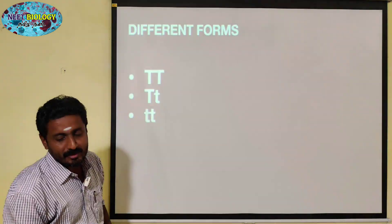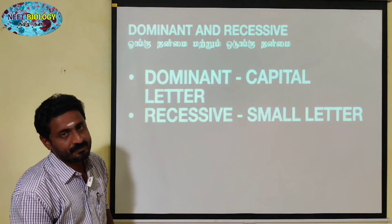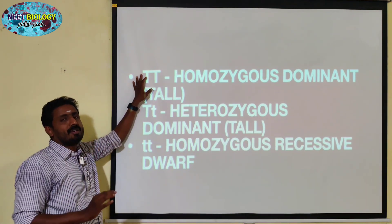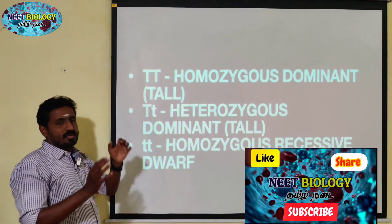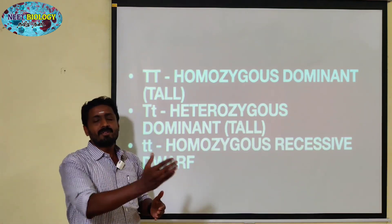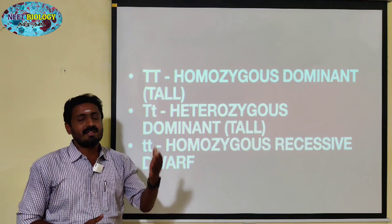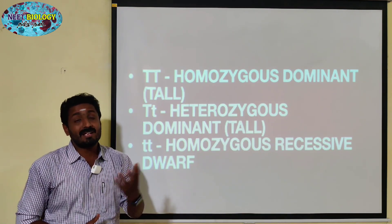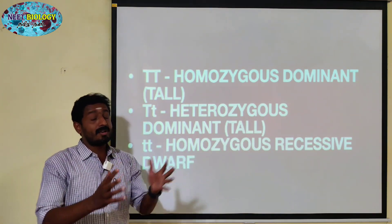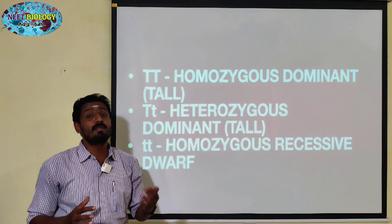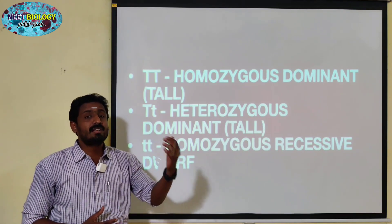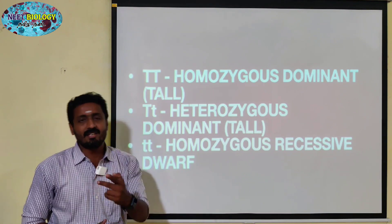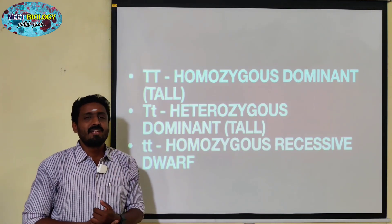The dominant character is expressed in the hybrid. Dominant is expressed in both homozygous dominant and heterozygous dominant. Capital T capital T is homozygous tall, and capital T small t is heterozygous tall. The tallness character is expressed in both cases because capital T is dominant.